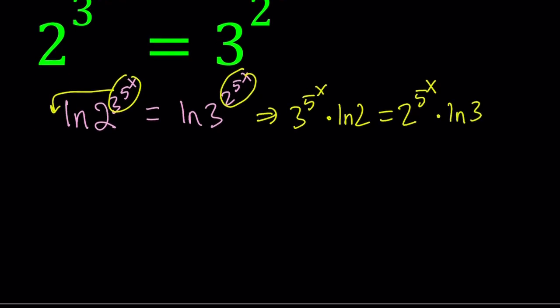Now we have 2 exponential expressions whose exponents are the same, so that's good. Otherwise, it's going to be impossible to solve. If you bring those together, so let's go ahead and divide them like this: 3 to the power 5 to the power x divided by 2 to the power 5 to the power x equals ln 3 over ln 2.